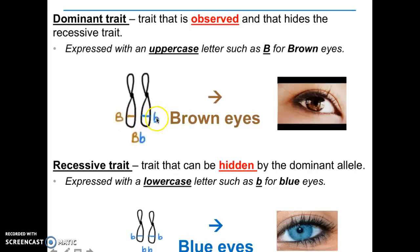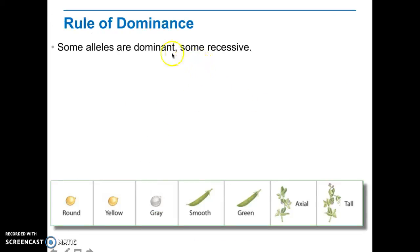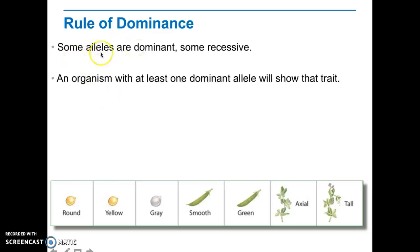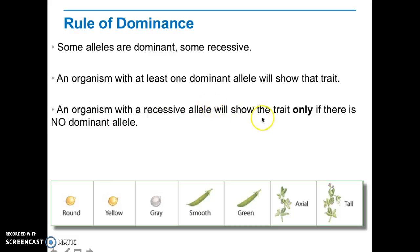The big B is going to hide or step over the little b, so an organism with big B little b will have brown eyes. This was something Mendel discovered — some alleles were dominant and some were recessive. For example, being tall was dominant, and yellow seeds were also dominant. An organism with at least one dominant allele will show that dominant trait. An organism will show the recessive trait only if there is no dominant allele present — both parents need to contribute the recessive allele.